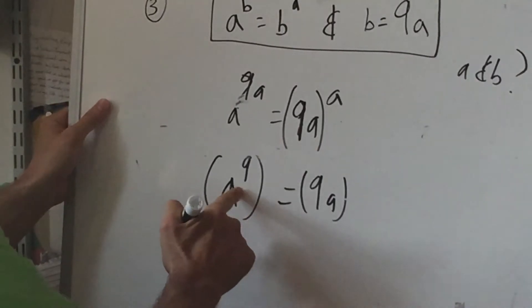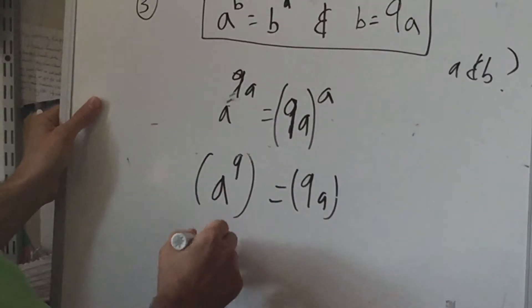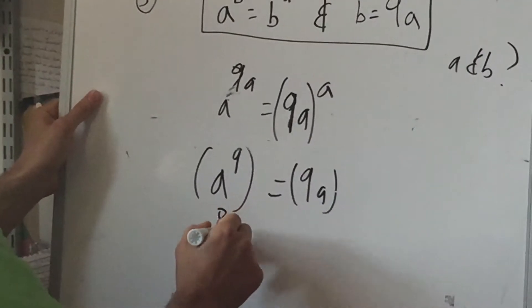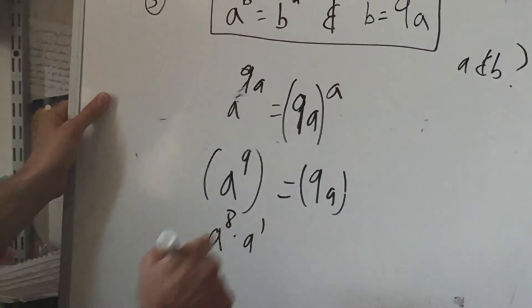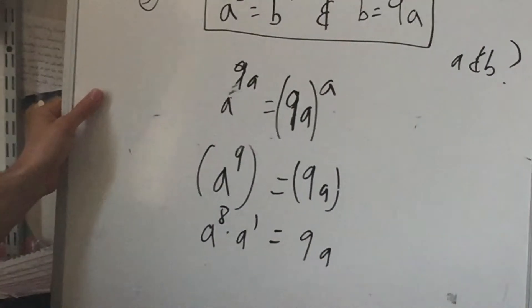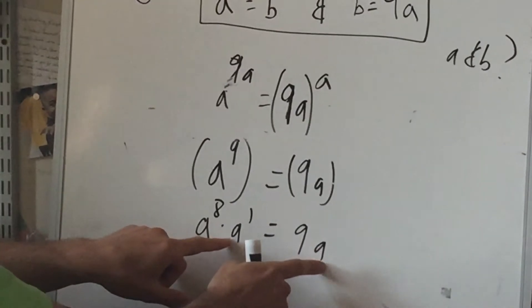So A to the 9th is equal to 9A. Now since this is basically saying A times A times A times A nine times, we could think of it as A to the 8th times that 9th A. And this is 9A as well.